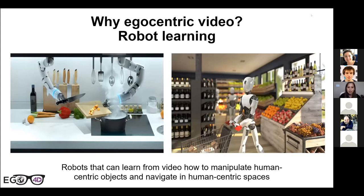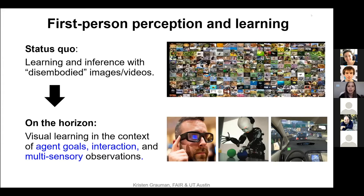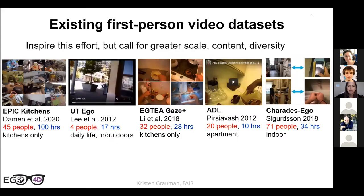Within Ego4D we are motivated by two factors. First, augmented reality — we want AR systems of the future that assist a user based on their current and past activity. Second, robot learning — we imagine robots that can learn not only from their own first-person experience but vicariously through human-captured videos, especially for navigating and manipulating in human-centric spaces.